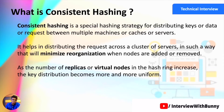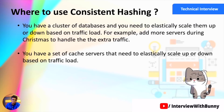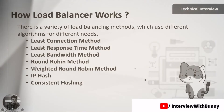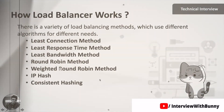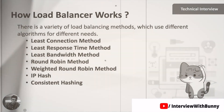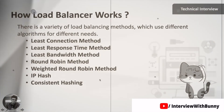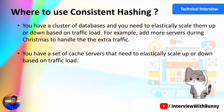Now that we understand what consistent hashing is and how it behaves internally, let's understand where we should use it. Whenever we have a cluster of servers and need to distribute traffic uniformly across them, we use consistent hashing. This is why, when we discussed load balancing in a previous video, we also mentioned consistent hashing — a load balancer uses the consistent hashing algorithm to distribute traffic uniformly across different servers.